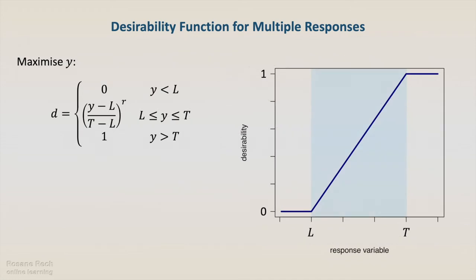If the objective for the response y is a maximum value, the desirability function is structured to return 1 if the response is higher than the target value, to return 0 if the response is lower than a defined threshold or lower limit, and to return a value between 0 and 1 if the response lies between the lower limit and the target.